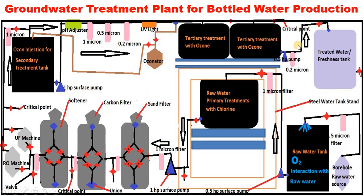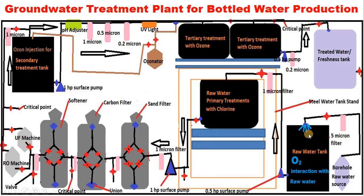The water flows from the borehole and enters into a 5-micron filter. This 5-micron filter removes debris coming from the borehole — particles of 5 microns and above are trapped, while those smaller will flow through. Once the water comes into the aeration tank, you can see how it splashes in; the water is being interacted with air.